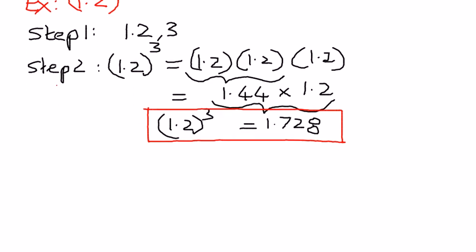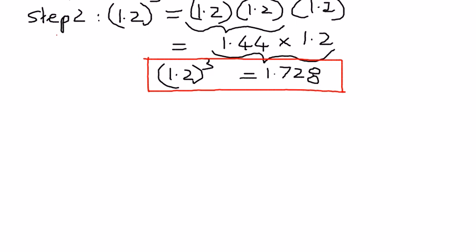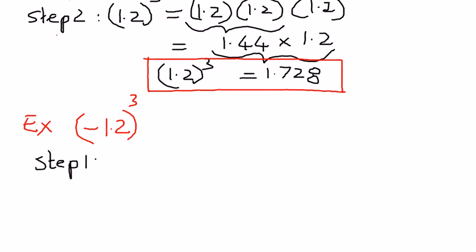Let's look at another simple example. This time, let us say we have the base term with a negative sign: negative 1.2 raised to the power of 3. In step number 1, let's break it down. We want to recognize the base term and the exponential term. The base term here is negative 1.2 — make sure we recognize the negative sign which is inside the parenthesis. Therefore the base term is negative 1.2, and the exponential term is 3.